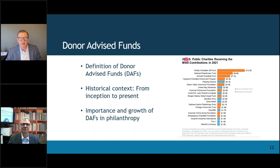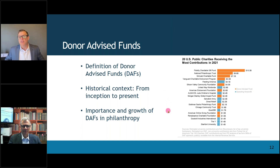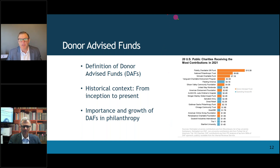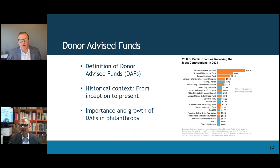Fidelity is the largest charity in the United States by a country mile today. I think that chart on the right-hand side is probably what scares some of our legislators, like Chuck Grassley from my home state of Iowa, who since the beginning didn't really like donor advised funds and was very skeptical of them. But what this chart doesn't show you is all of the grants that have been made from donor advised funds over the decades.